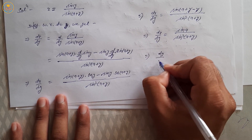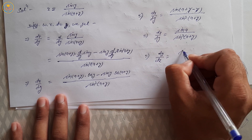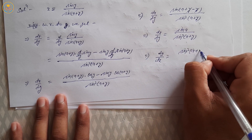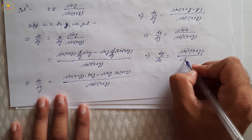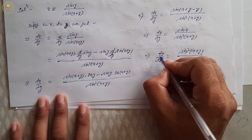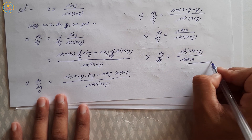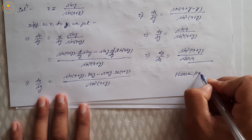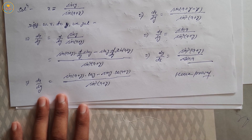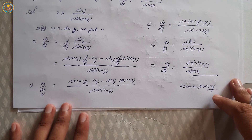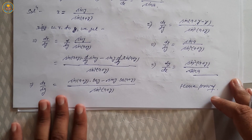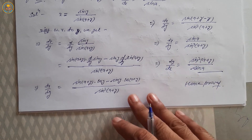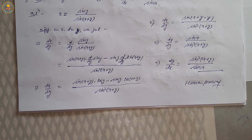Taking the reciprocal: dy by dx is equal to sin²(a plus y) upon sin a. Hence proved. Question number 12 complete. We will discuss more in the next video. Thank you so much.